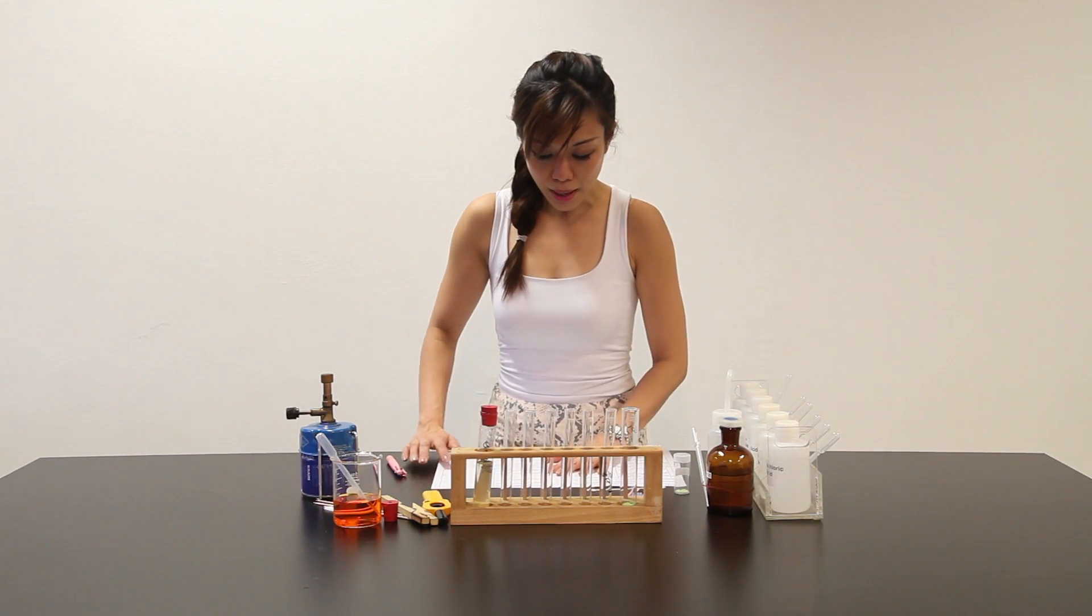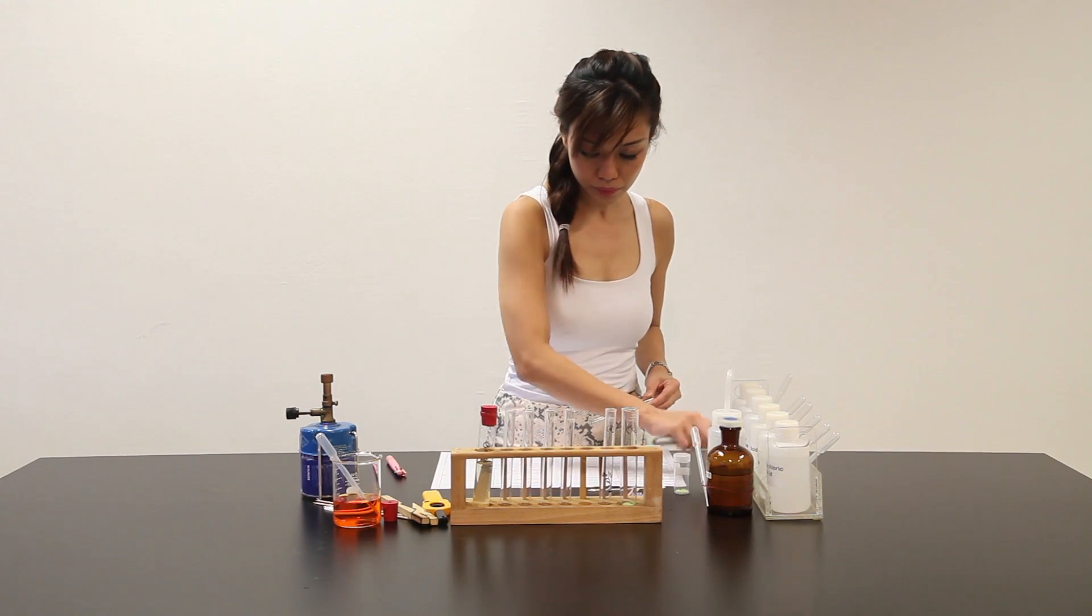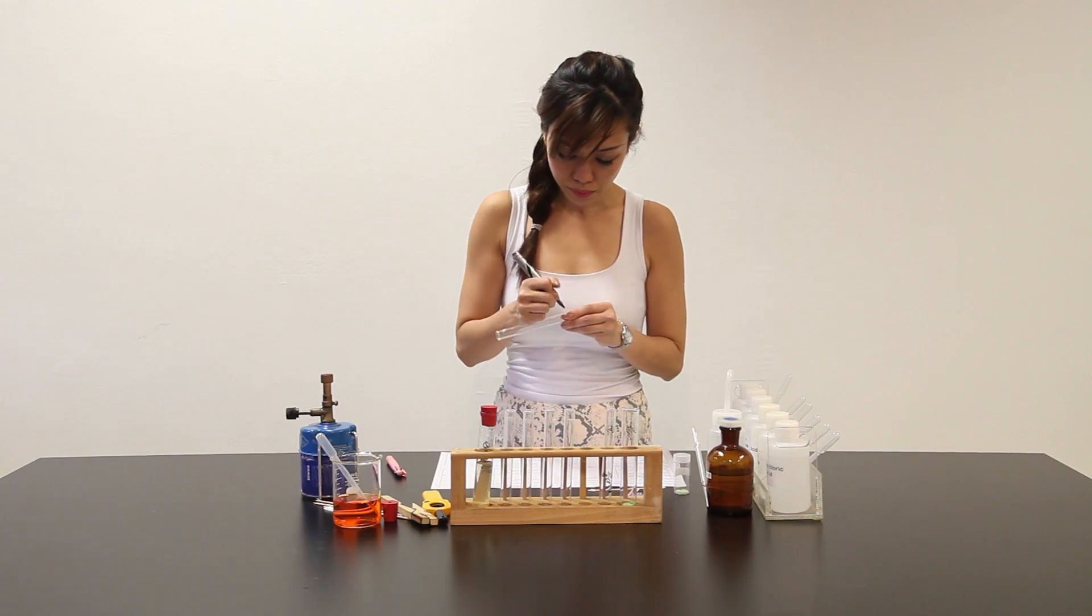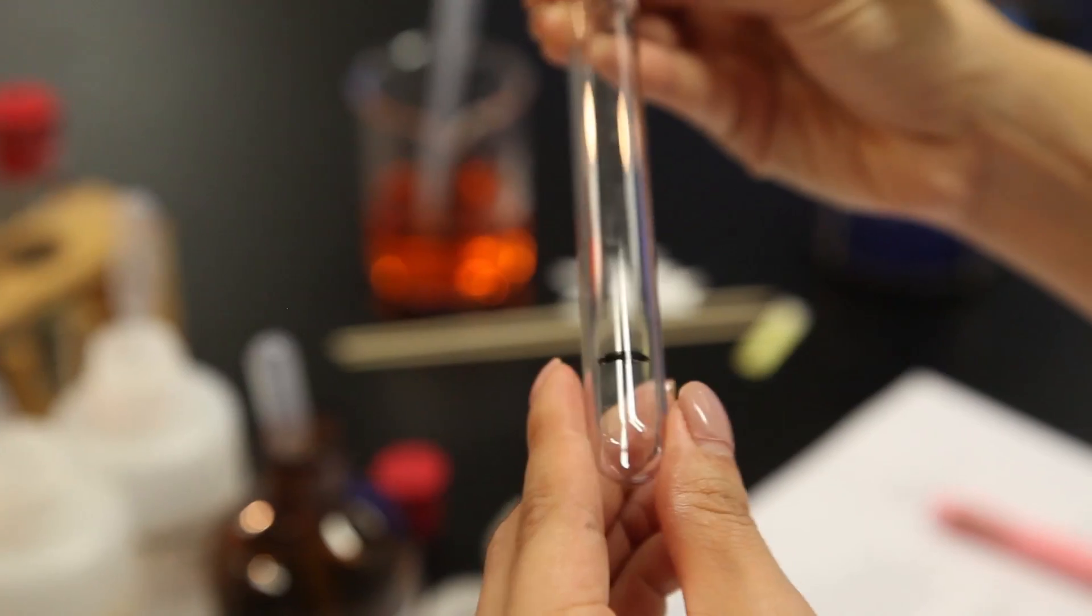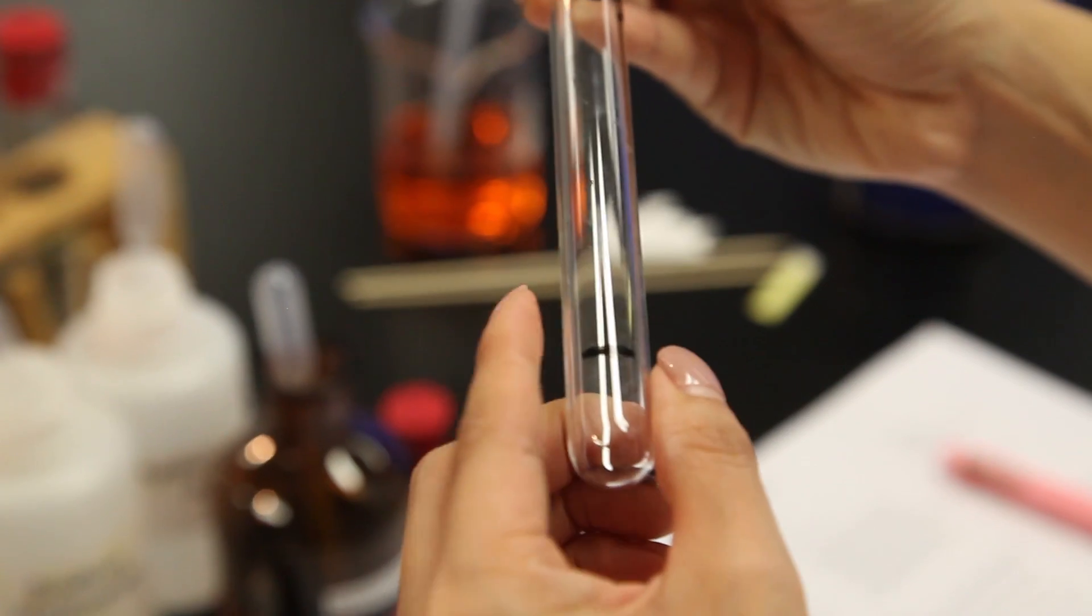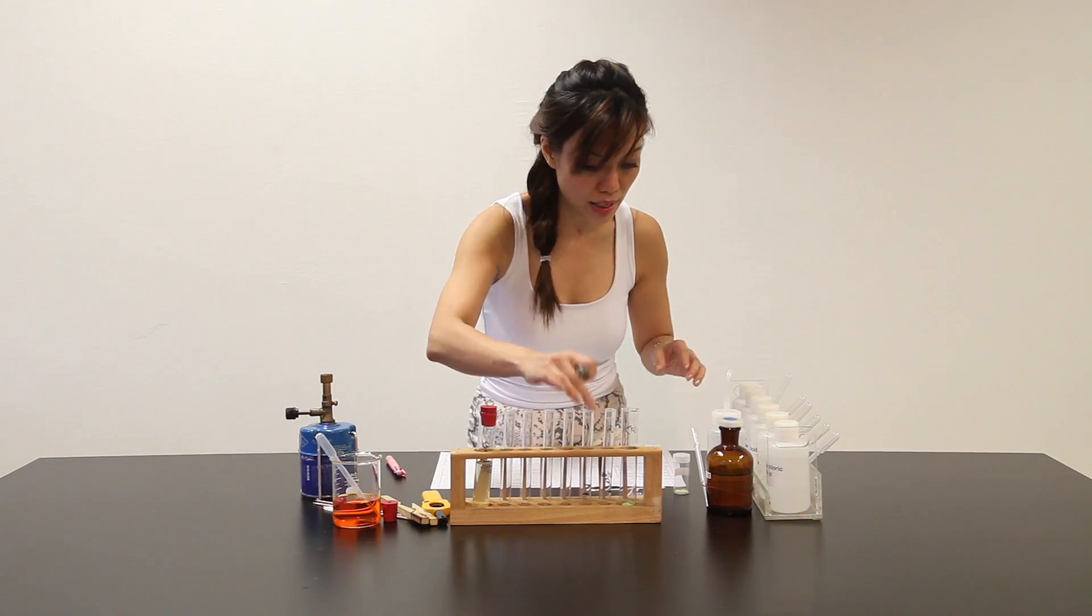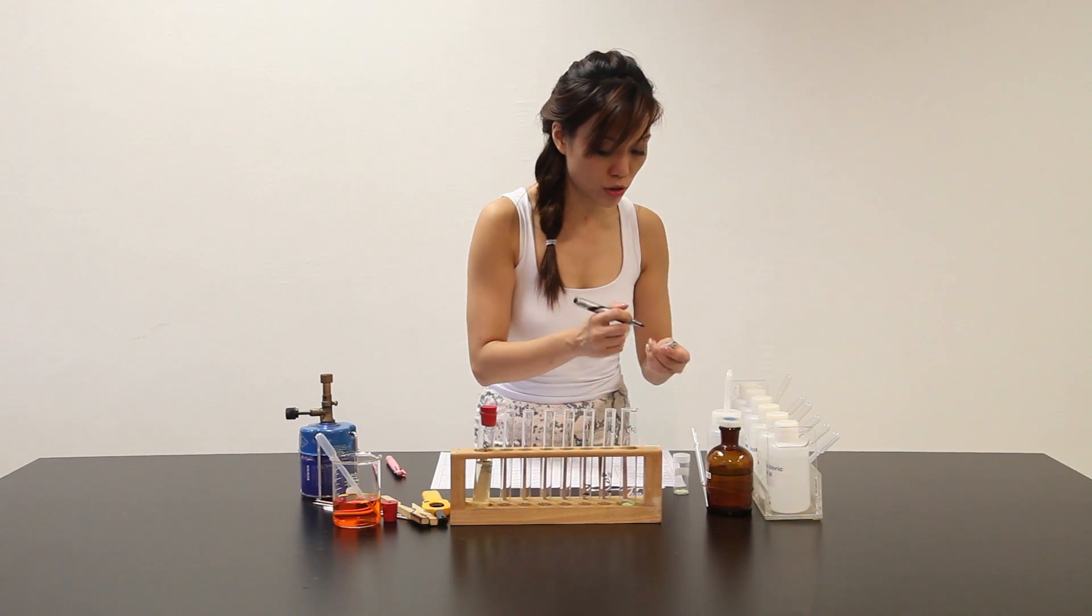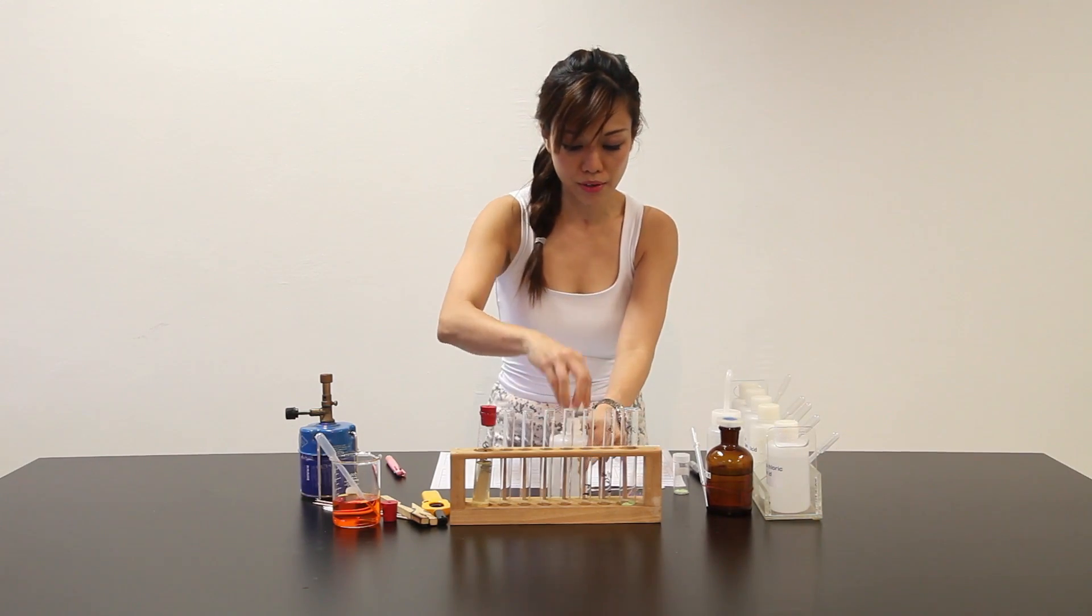So let me move on to part C. Part C here says place about 2 cm3 of Solution Q into a clean test tube. And to this solution, add another 2 cm3 of NaOH. So 2 cm3 of 2 cm3, I have marked already. And they want NaOH. So let me place NaOH, which is here, right in front of me.